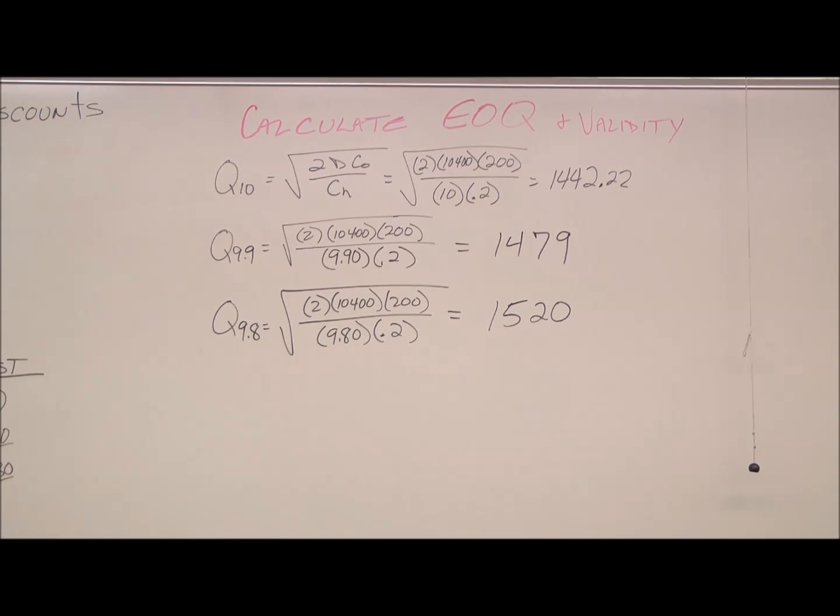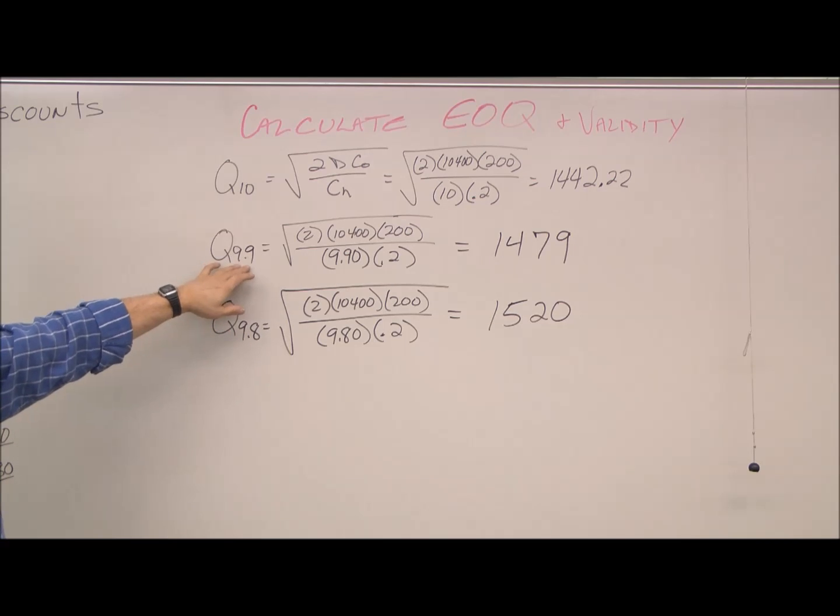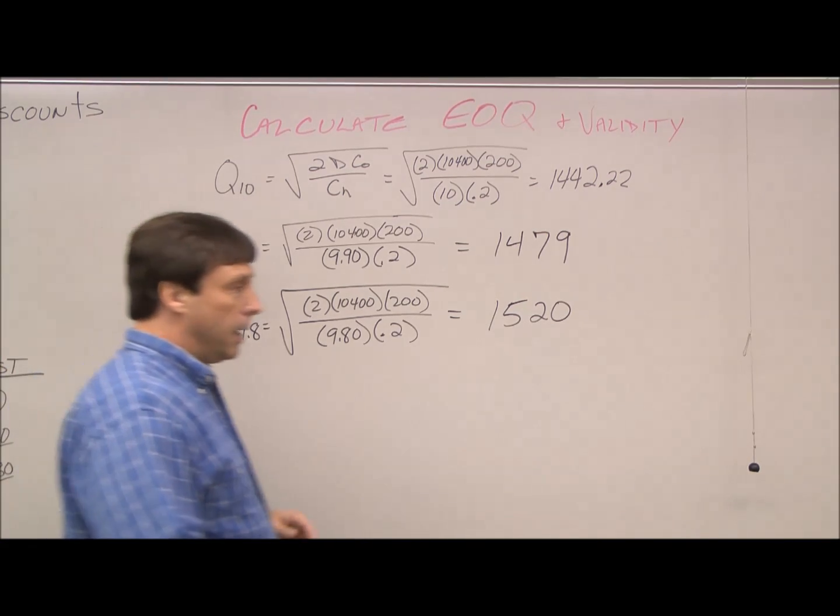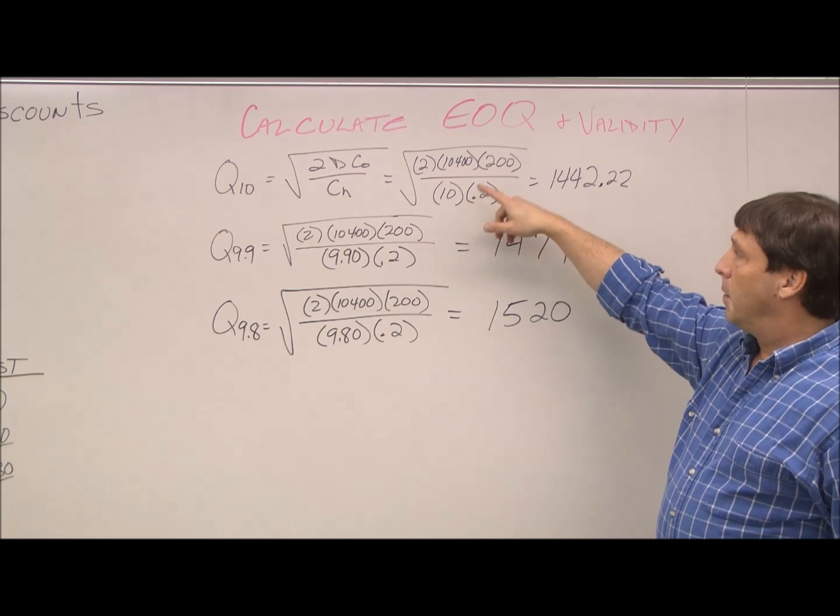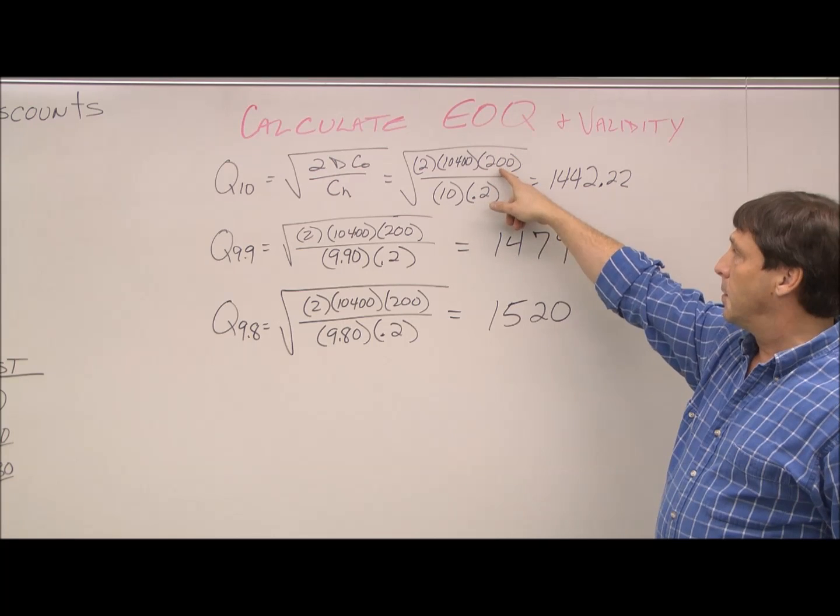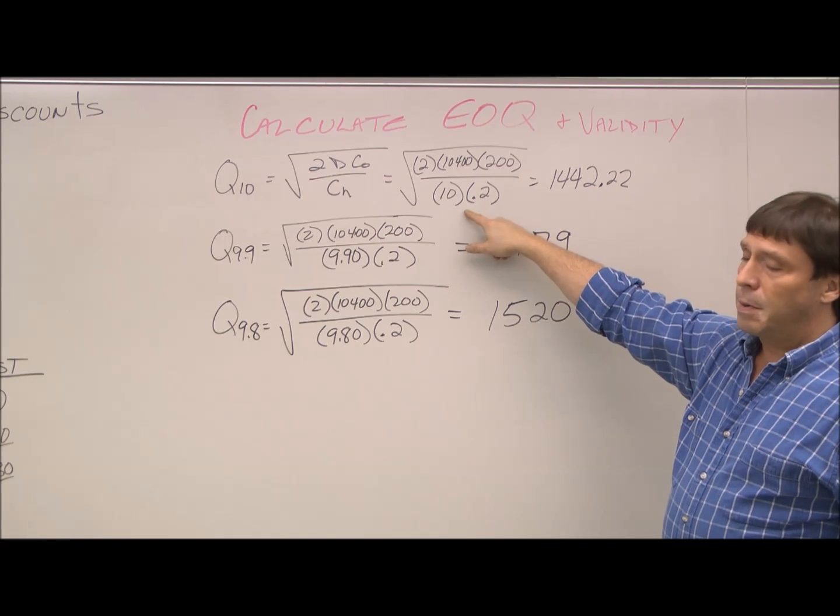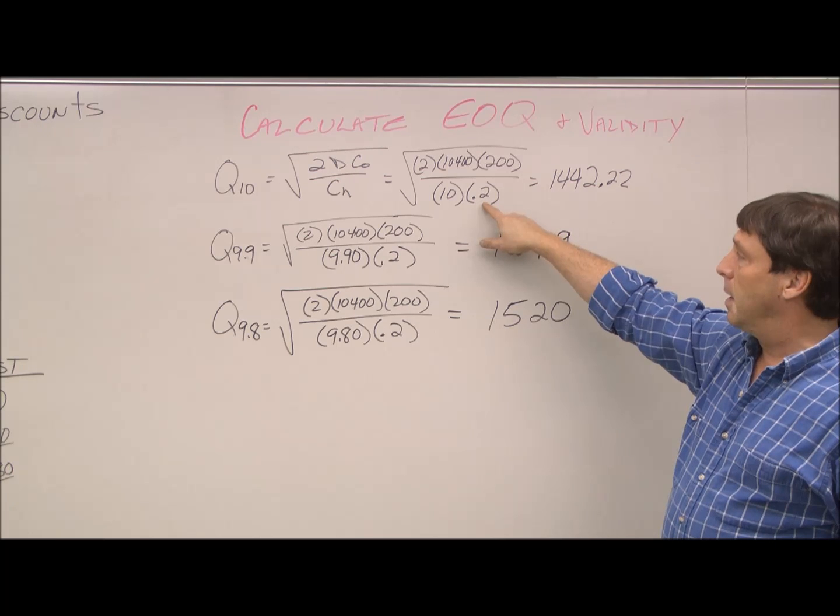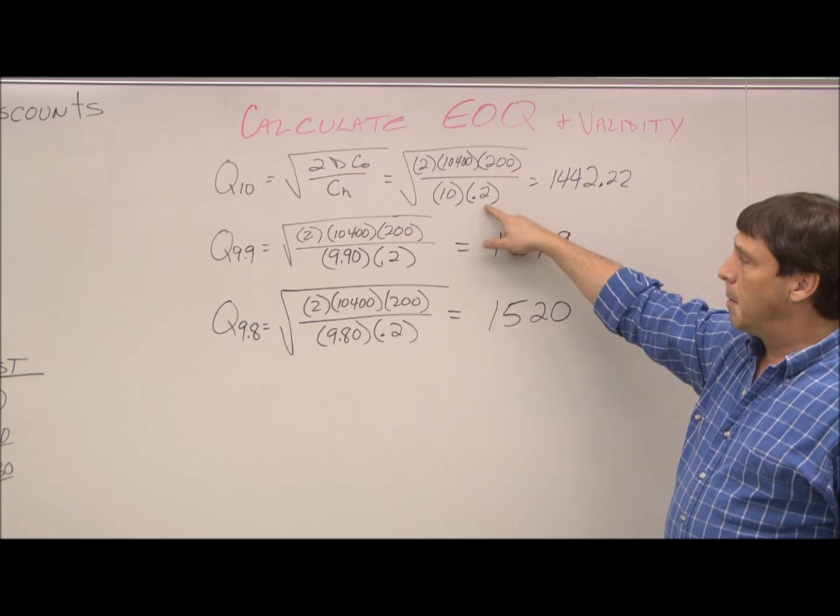First we calculate the individual EOQs for our three options, and then we determine validity. I just label them Q sub 10 to stand for the $10 price and Q 9.9 for the $9.90 price just to keep it separate. We know that our D is 10,400. We know our order or setup costs are $200. And notice in the denominator here that since we had a percentage, our percentage was 20% in inventory. It's going to cost us $10, so we take 20% of that. That's how we come up with this number.